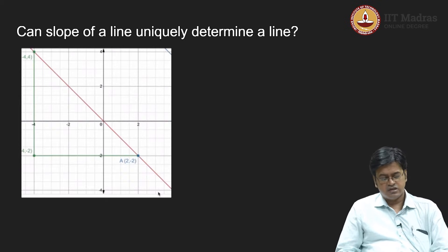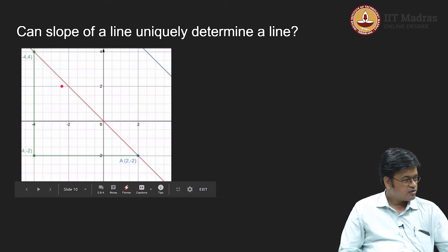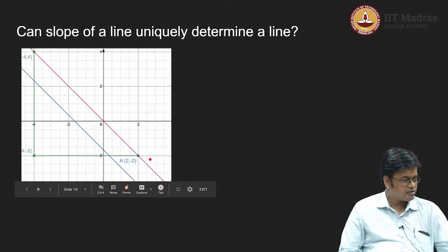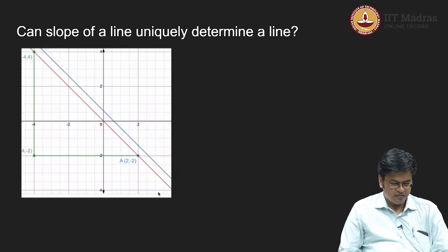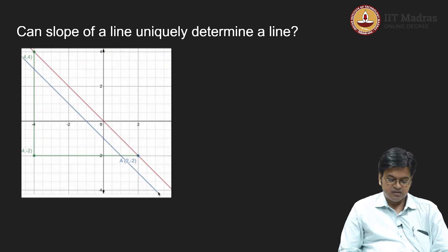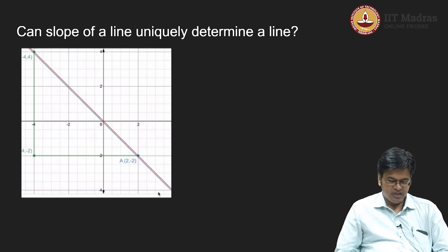The answer can be seen in this GIF image. If you look at this image closely, what we have done is fixed one line — this orange line is fixed, and we know how to compute its slope, which will be minus 1 based on the coordinates. The blue line revolving around is actually having the same inclination as the orange line. Since they have the same inclination, the tangents of those inclinations will match, and hence there can be infinitely many parallel lines which have the same slope.